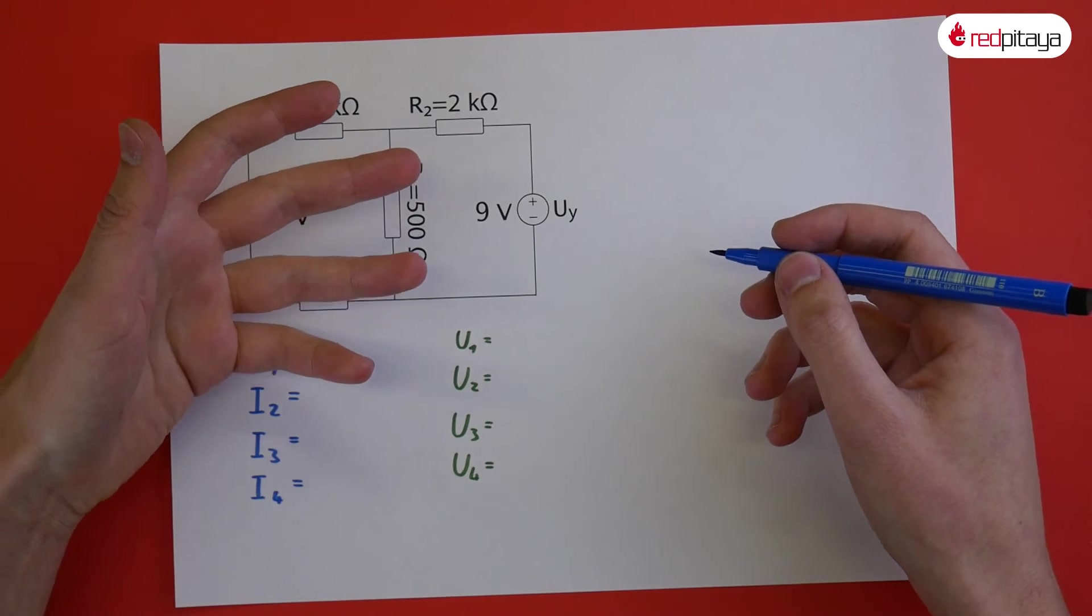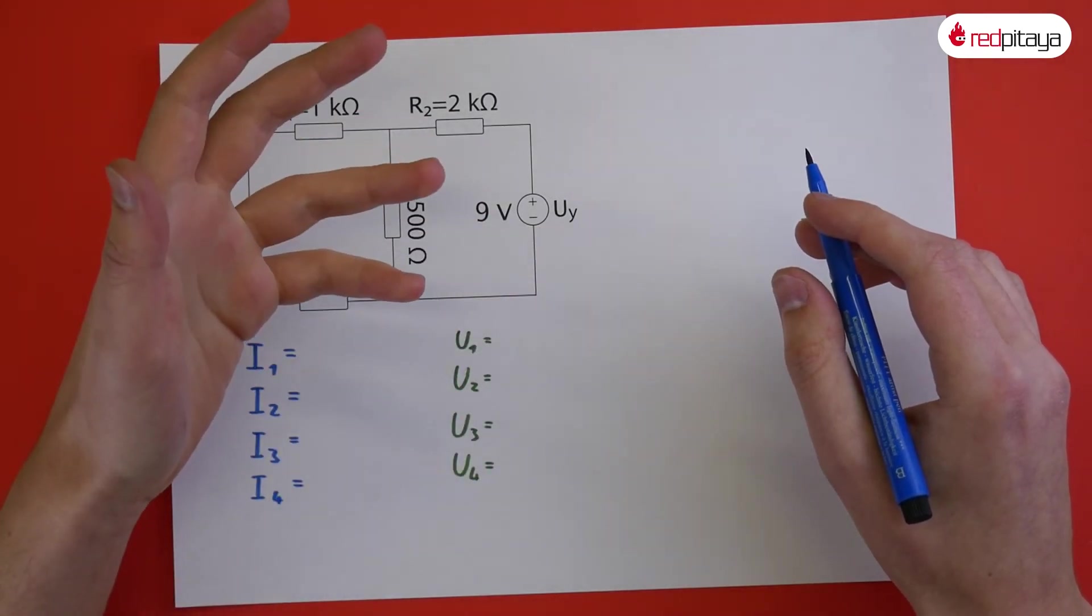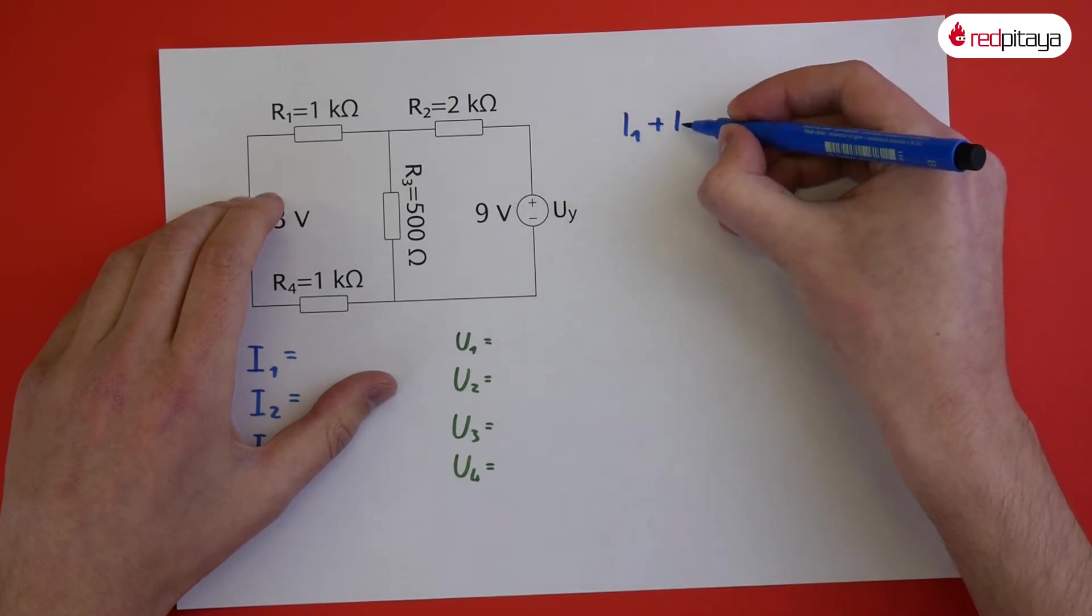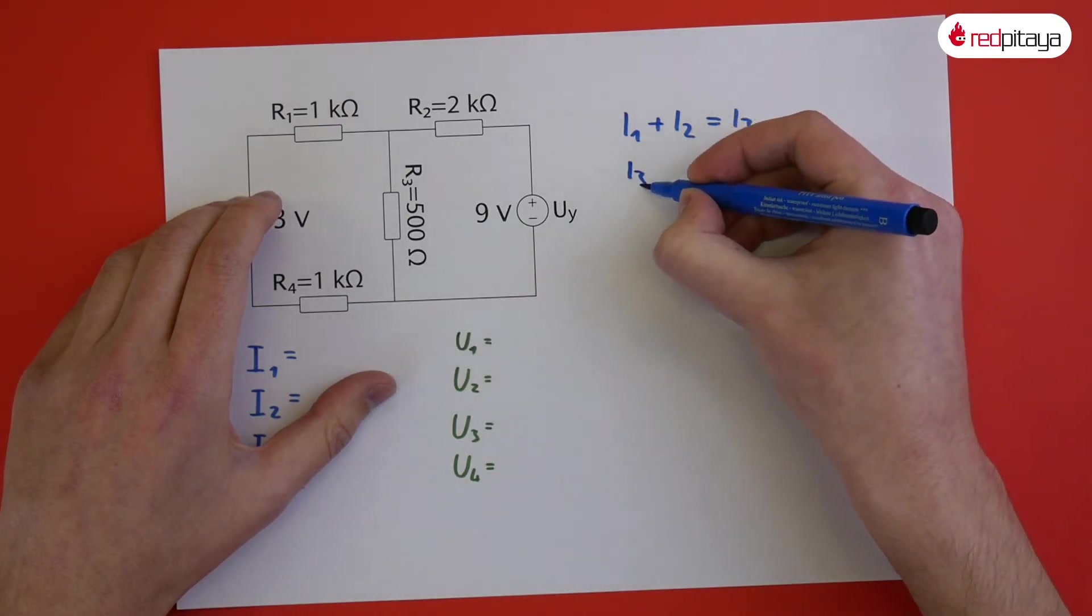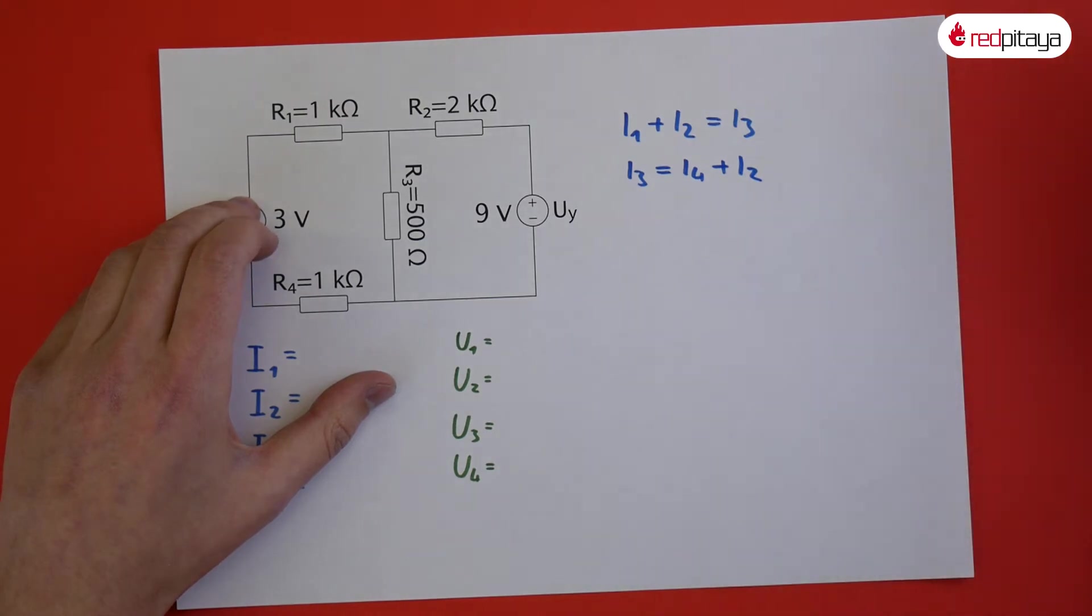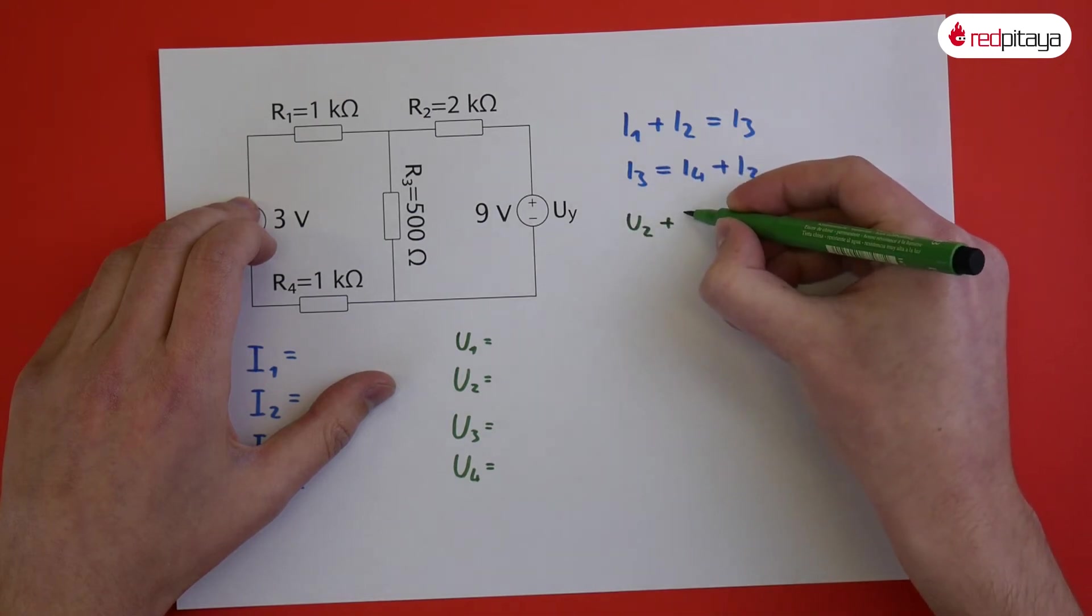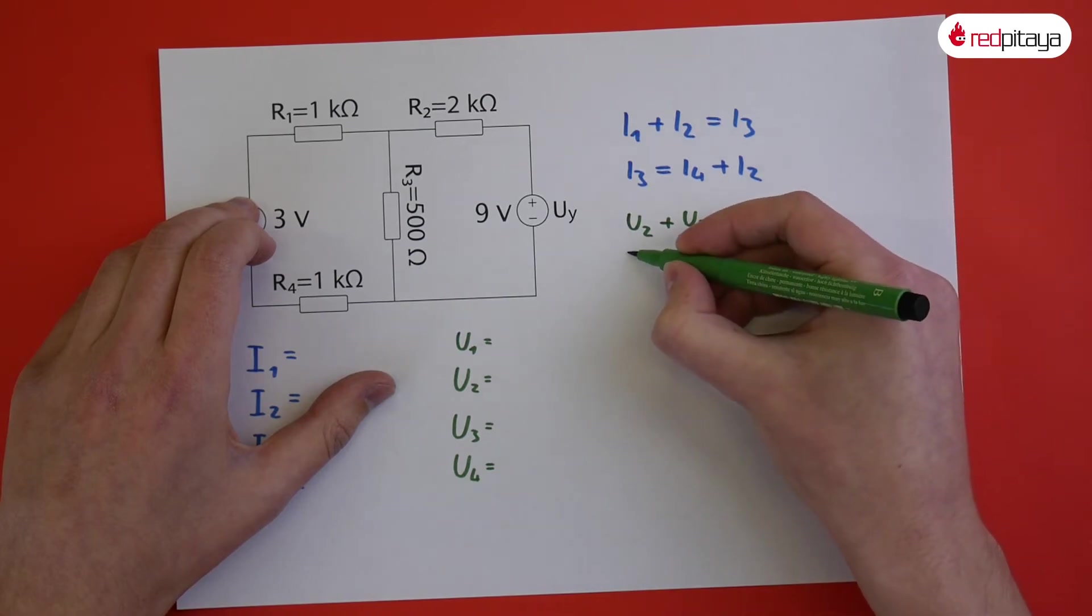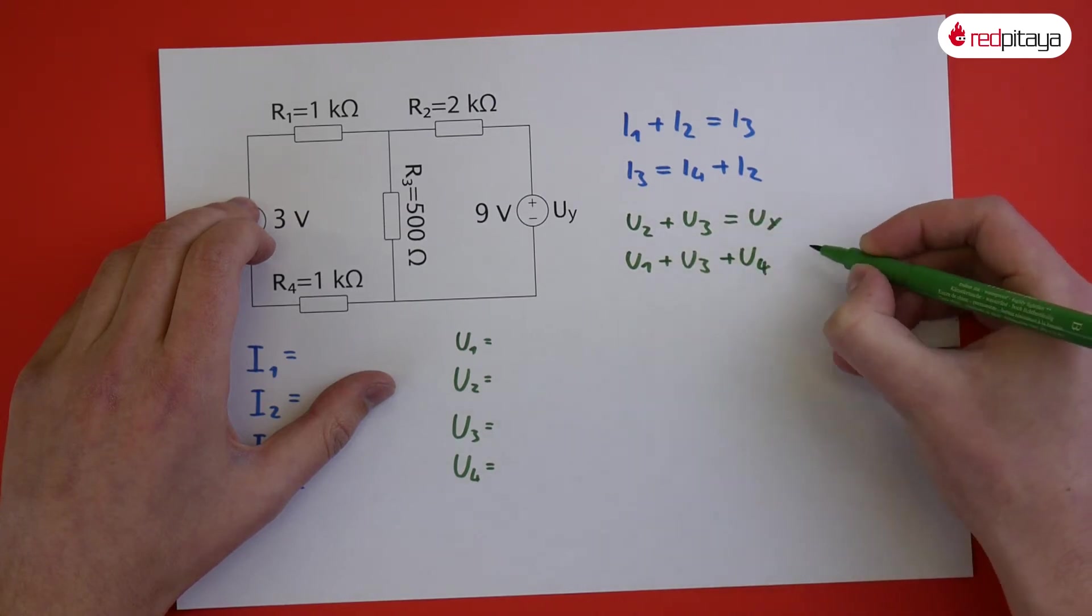Armed with this knowledge, we can tackle the circuit I showed you before. Be warned, this section will contain a bit of math, but just the setup and the solution. Kirchhoff's first law tells us that current 1 plus current 2 equals current 3. And on the second note, current 3 equals current 4 plus current 2. Kirchhoff's second law gives us the following two equations. Voltage 2 plus voltage 3 equals voltage Y. And voltage 1 plus voltage 3 plus voltage 4 equals voltage X.